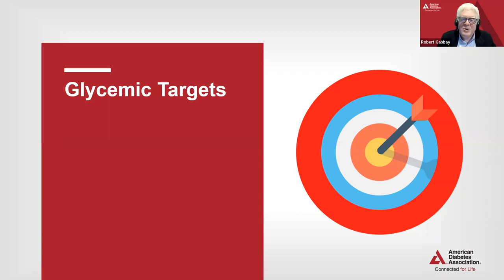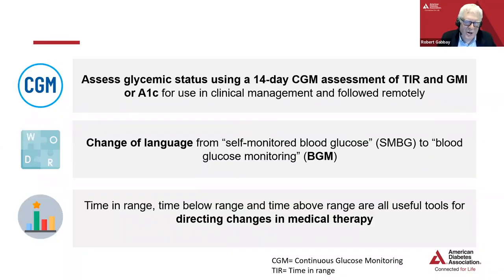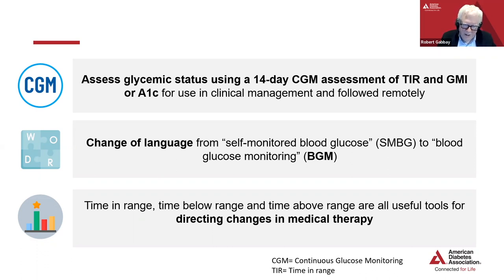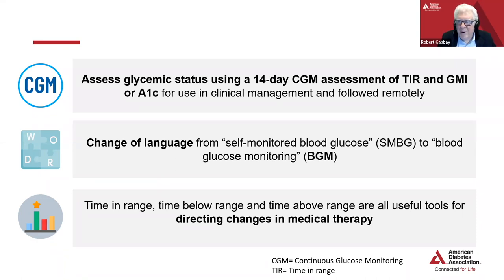Next, we move to glycemic targets. This is really a continuation of the importance of time in range and continuous glucose monitoring assessment. The recommendations here use 14 days as an assessment tool, along with A1C, as we've long advocated. There's a change in the language — instead of talking about self-monitored blood glucose, we're talking about blood glucose monitoring. And time in range, time below range, and time above range are information that can be used to adjust therapy.